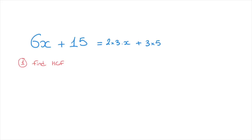Now that that's done, to find the highest common factor, all we have to do is underline all of the factors that both of these terms have in common. Looking at these two terms, it doesn't take us too long to see that the only factor they have in common is 3. So we can write HCF equals 3.